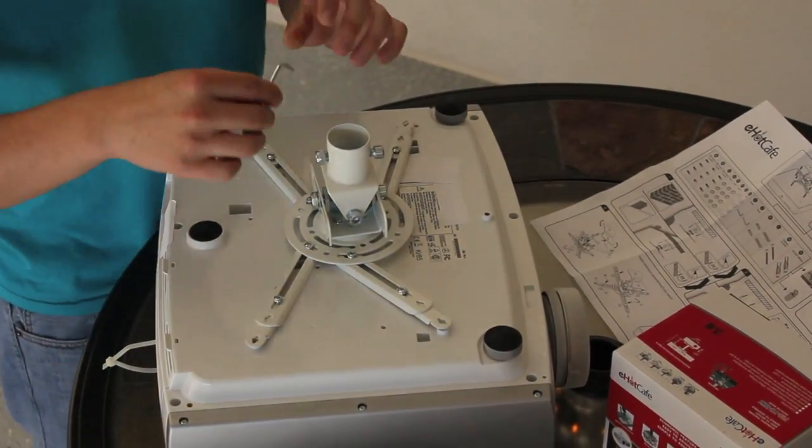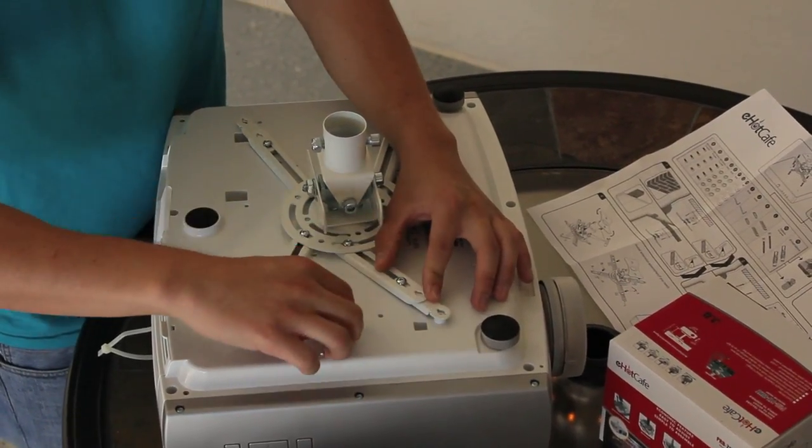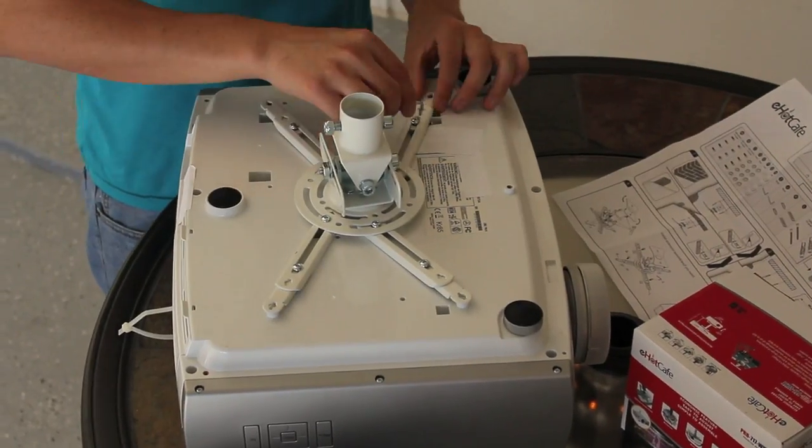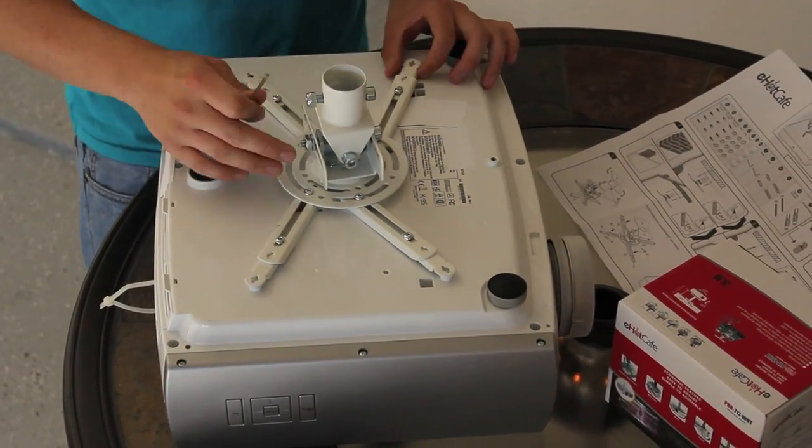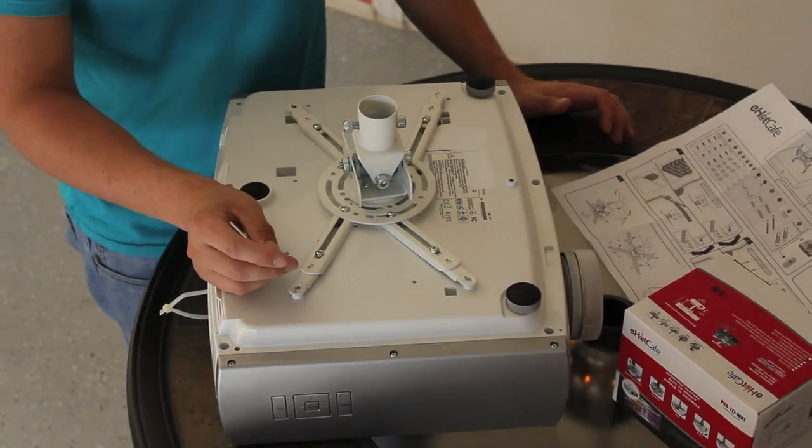When you have them on there, you can use the Allen wrench and tighten up all the little screws. Once you have that done, you can put the other screws in and the spacers, which I'll show you in a second.